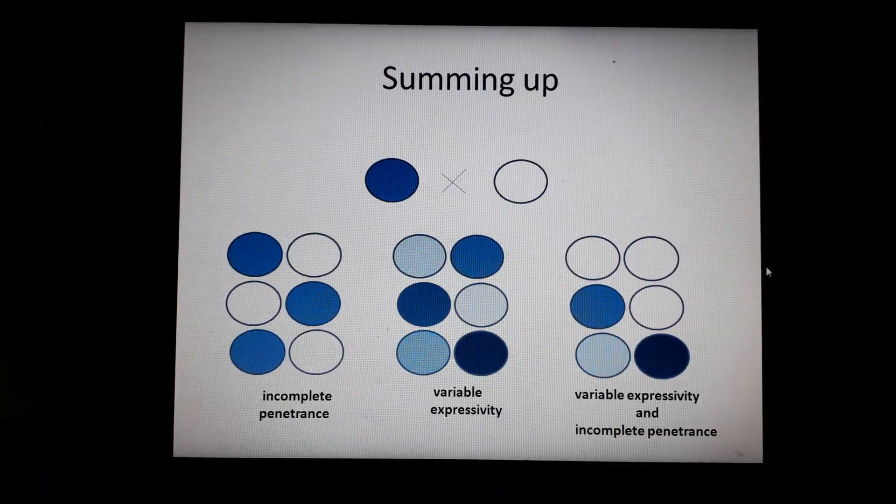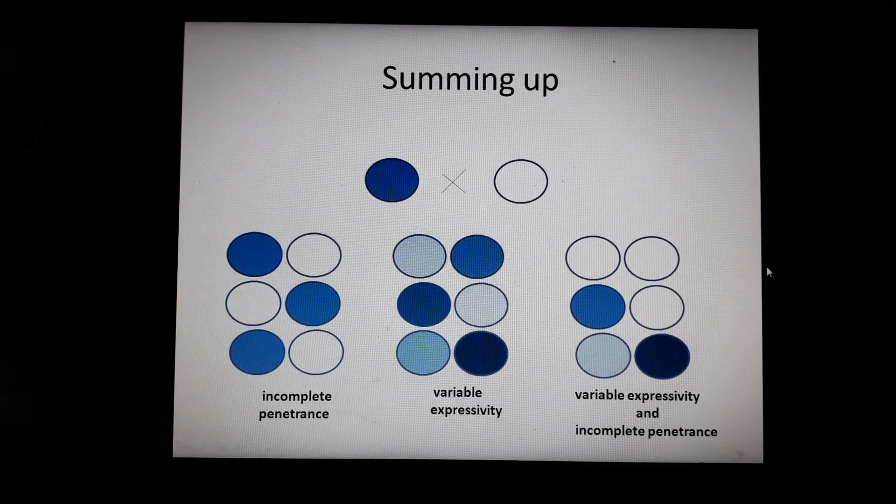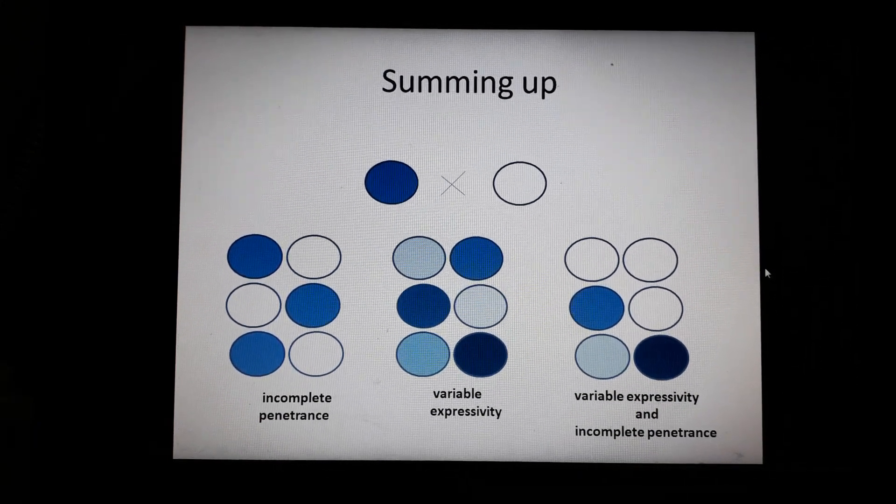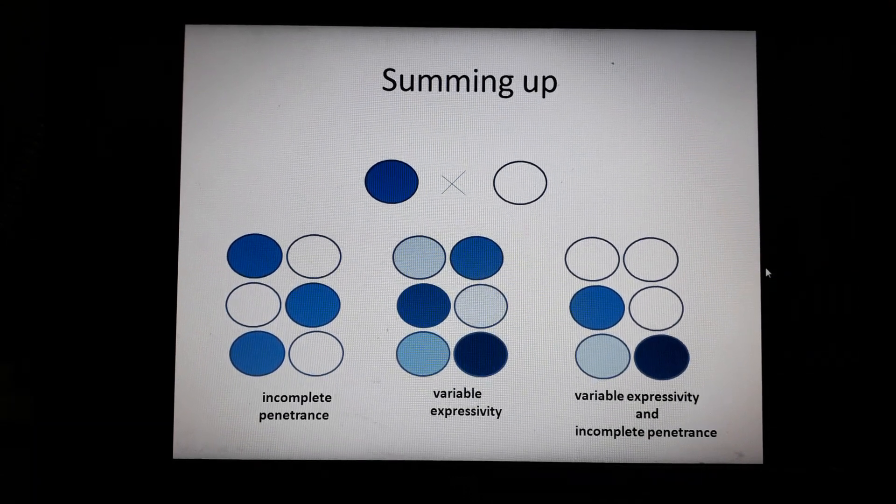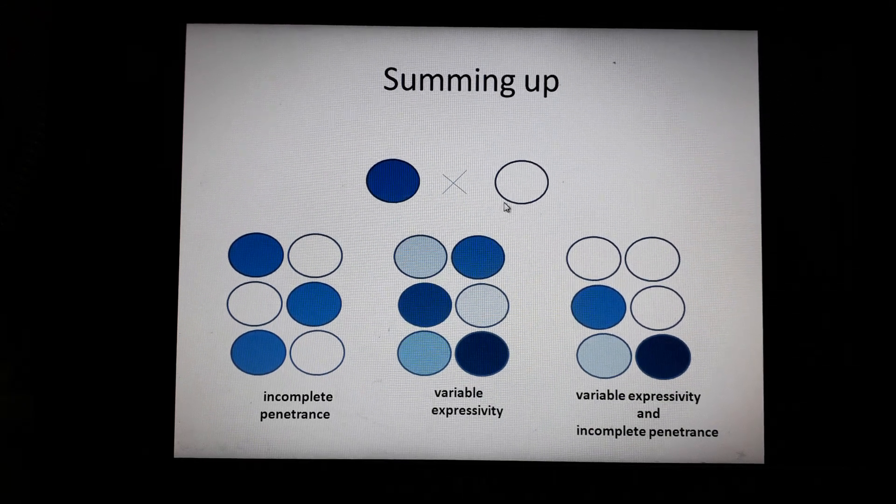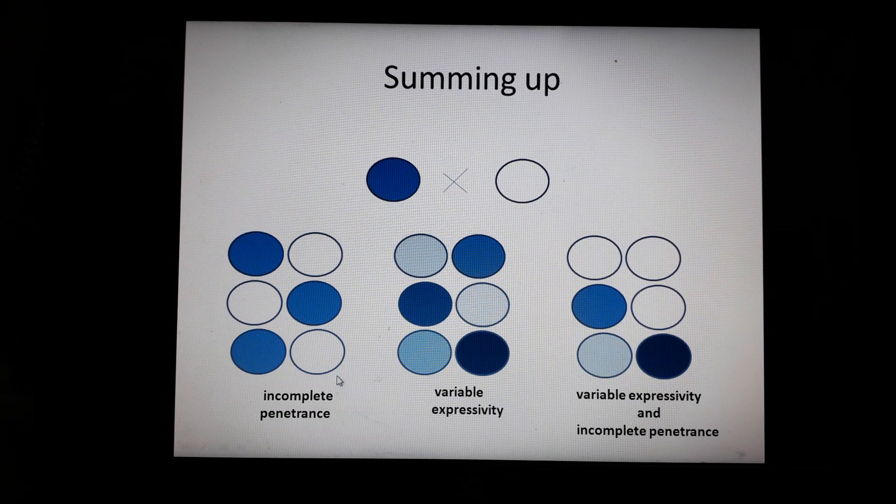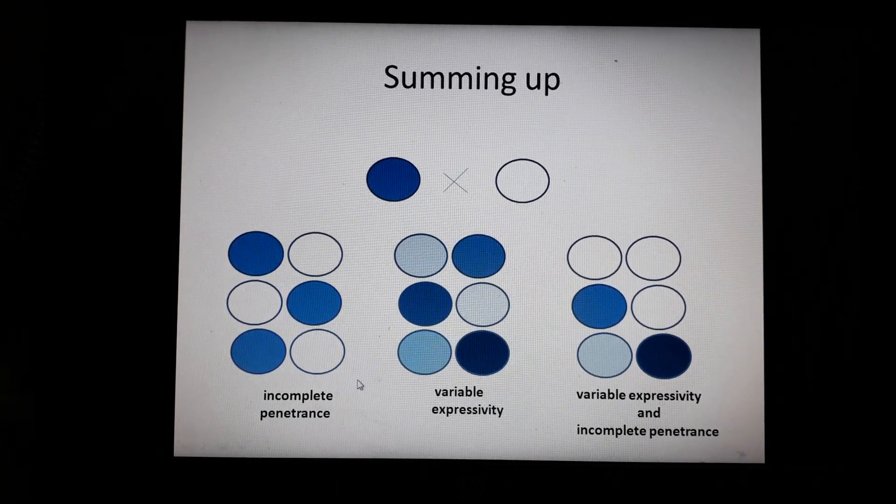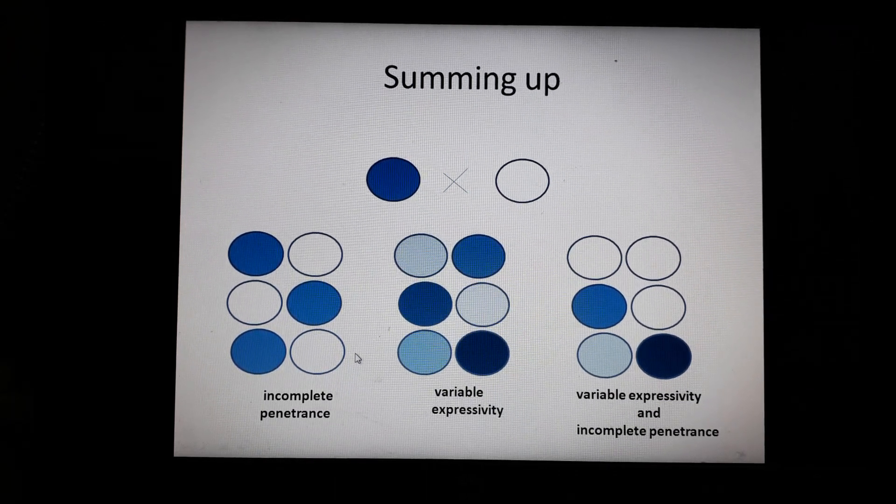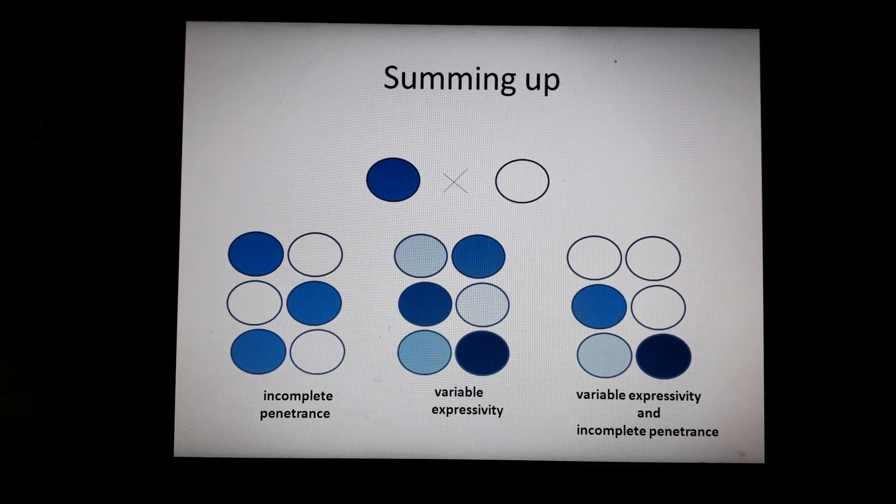Now if we sum up what we studied in the last lecture about penetrance, if we sum up both penetrance and expressivity, first this is that here you have four individuals. One you can see is white and one is dark blue. Incomplete penetrance, if we revise a little bit, was when your percentage of penetrance is less than 100 percent.